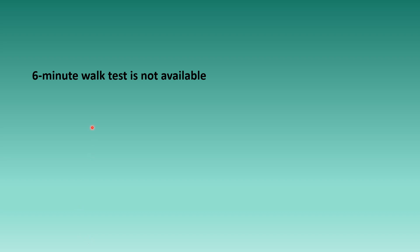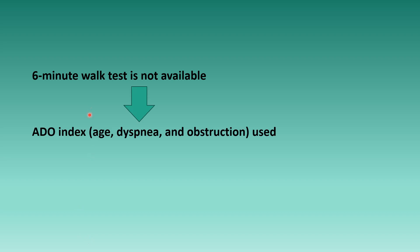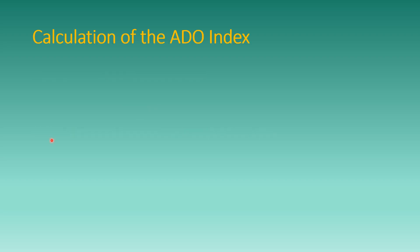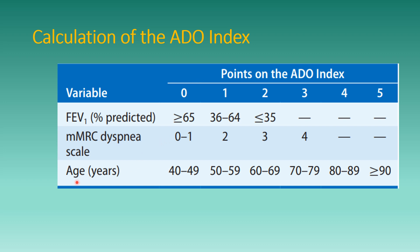If the 6-minute walk test is not possible or not done, you can assess the prognosis of COPD patients using the ADO index, which as the name suggests includes Age, Dyspnea, and Obstruction.